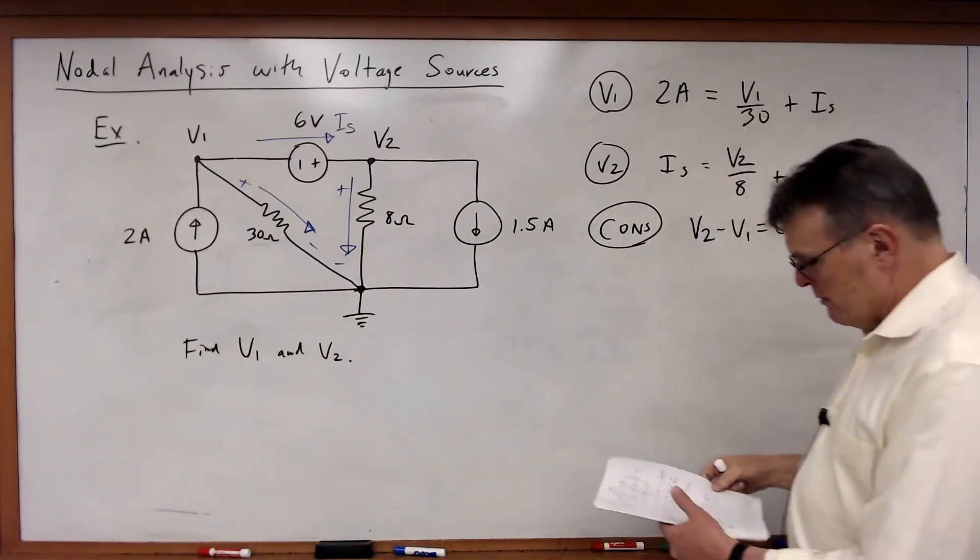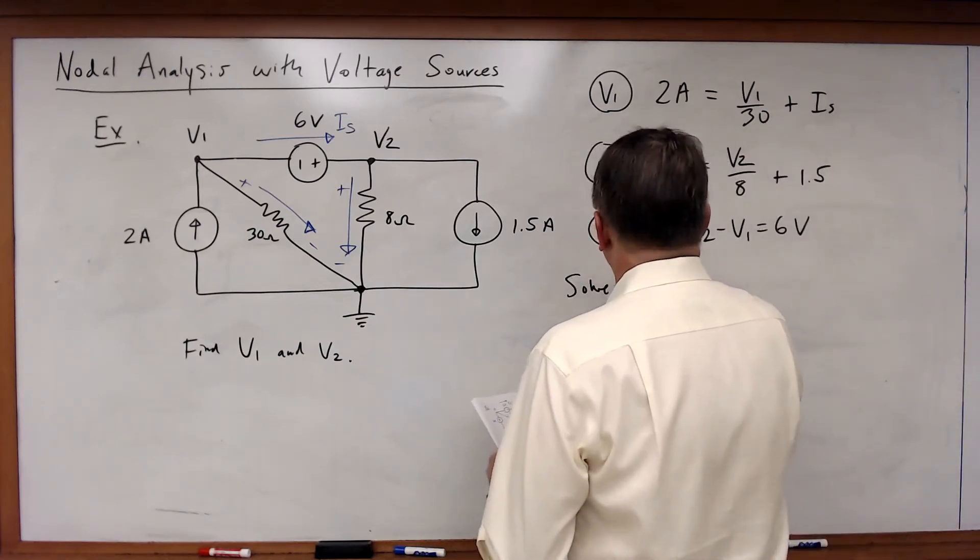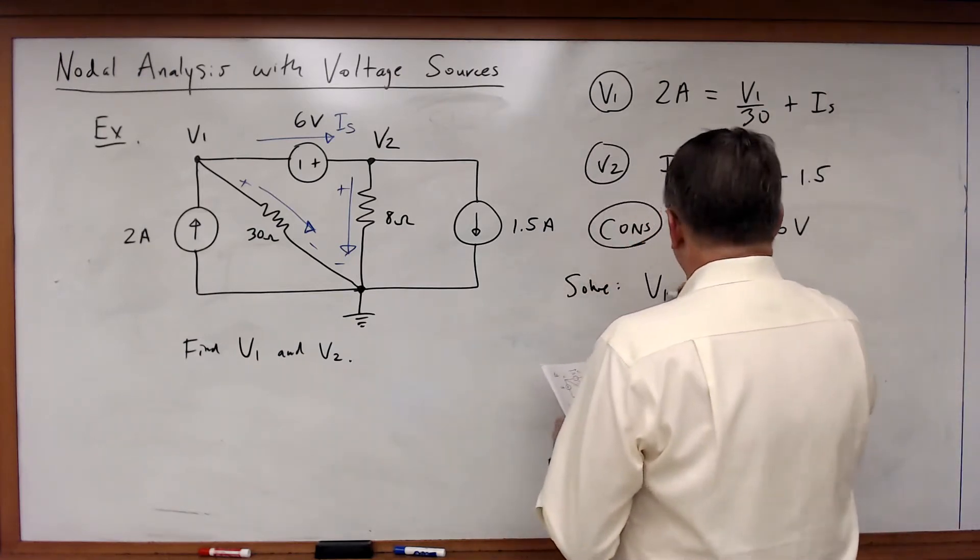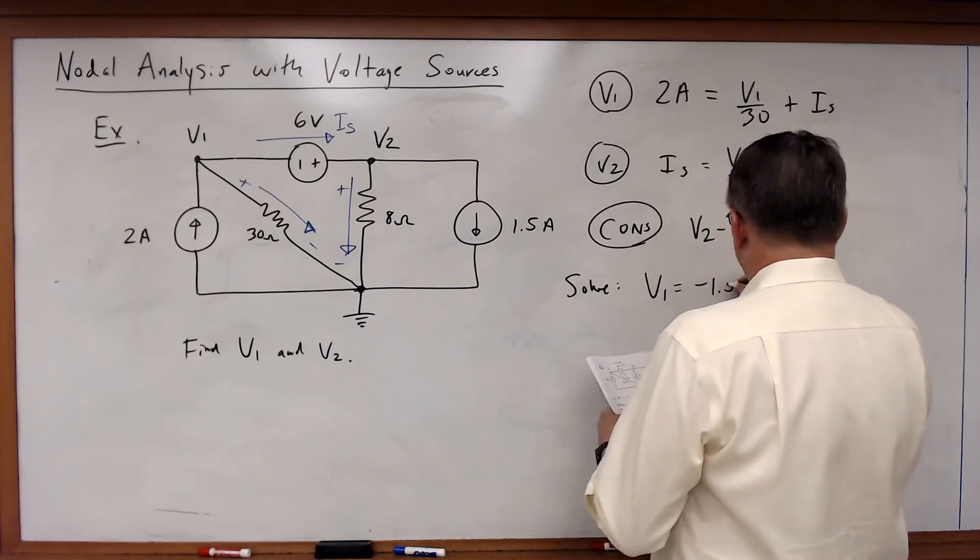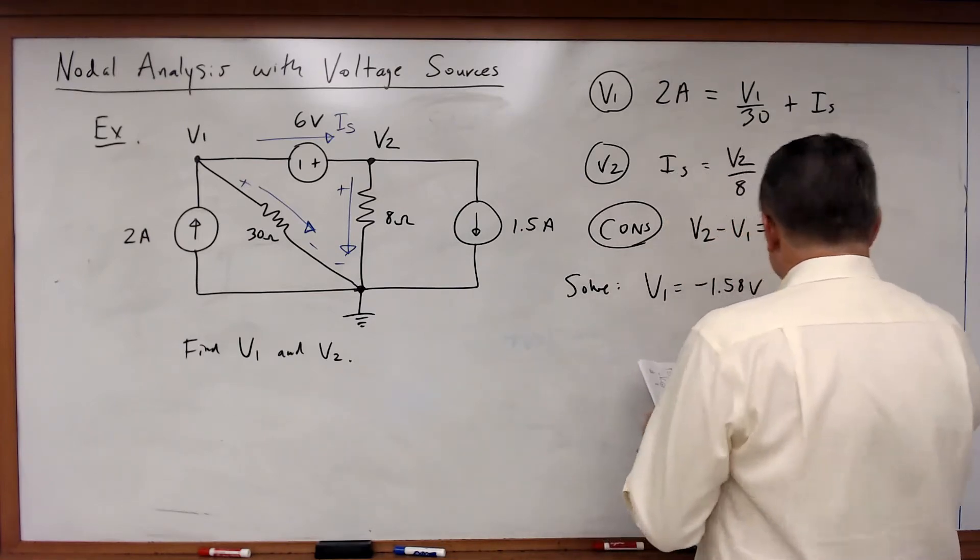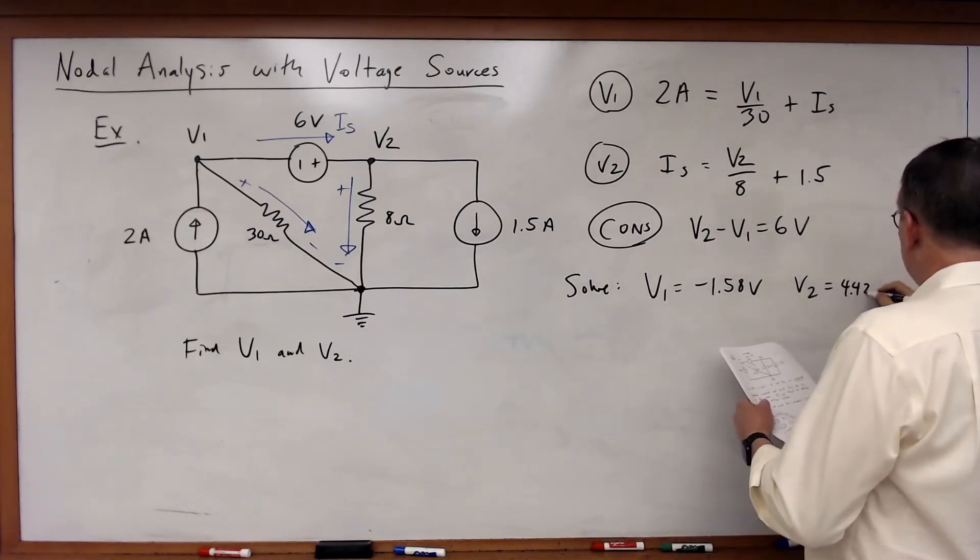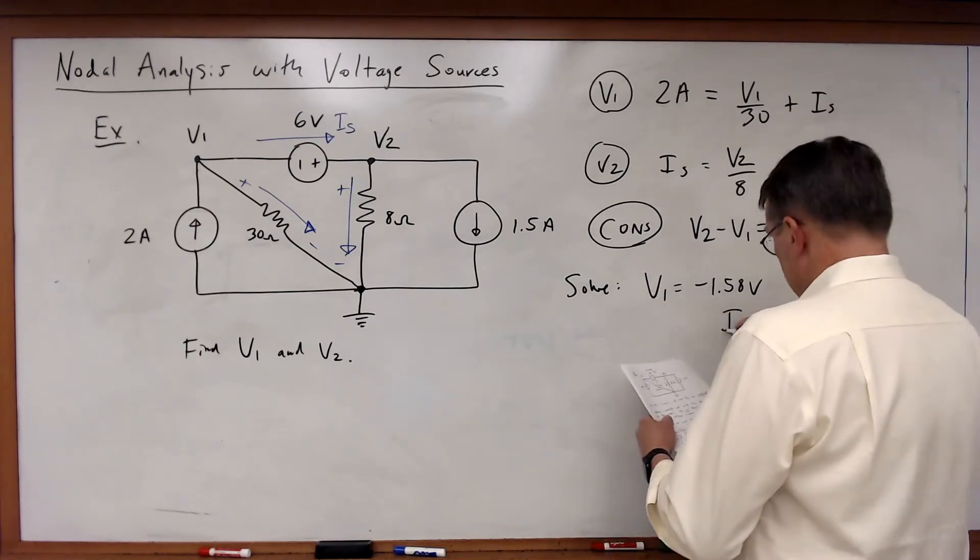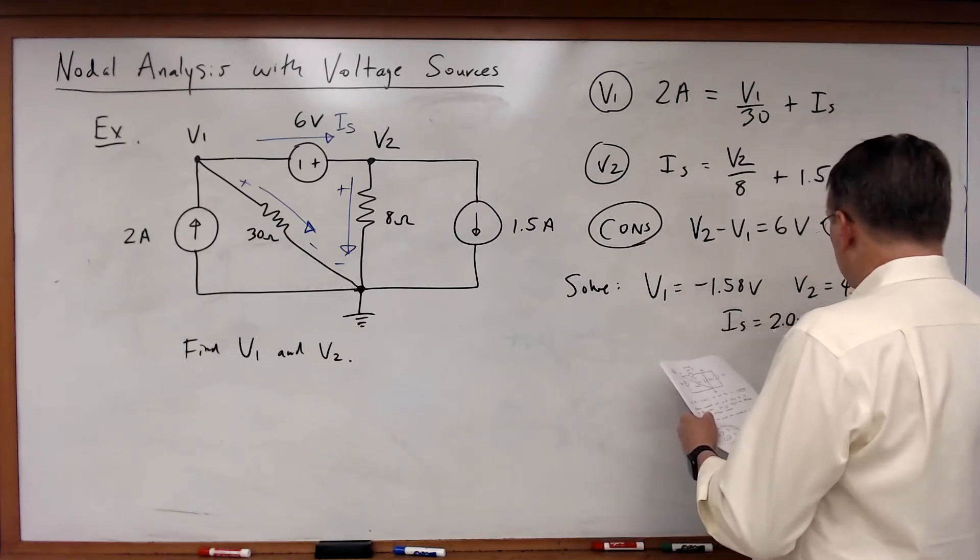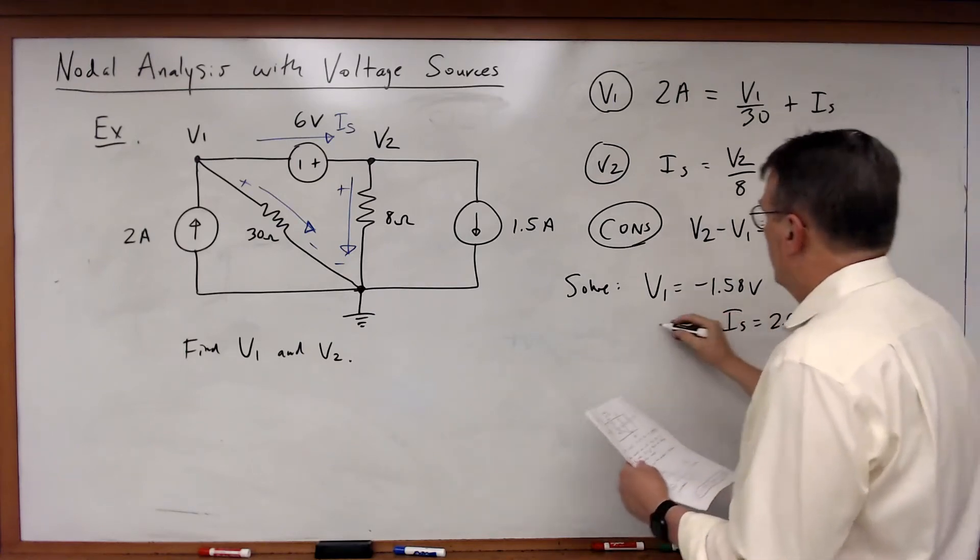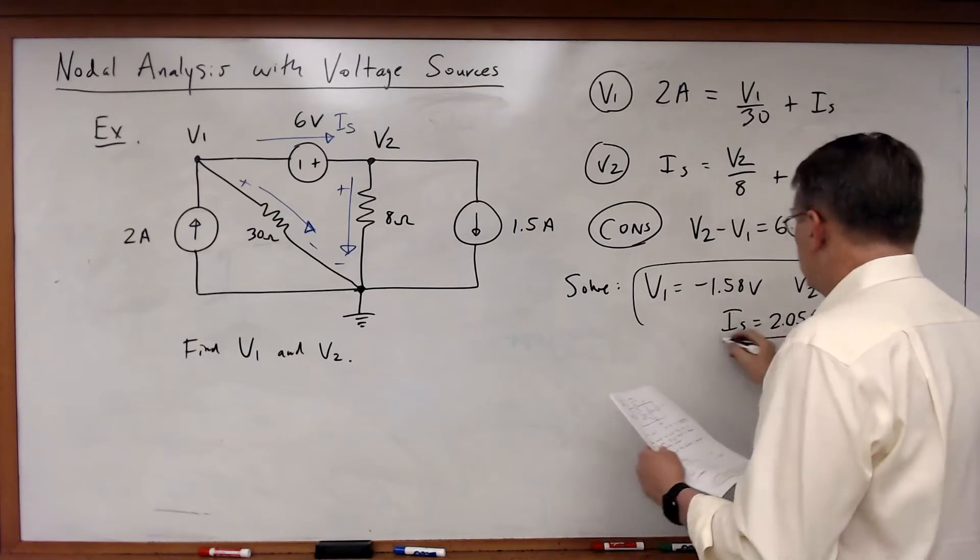Three equations, three unknowns. Now if I solve, what I'm going to get is that V1 is equal to minus 1.58 volts. V2 is equal to 4.42 volts. And IS is equal to 2.05 amps. And there's my solution.